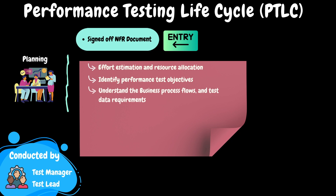During requirements gathering, we should collect the critical business process names. In the planning phase, we should work with business analysts or the functional testing team to understand the detailed navigational steps, dependencies, and test data requirements. We should document all the provided steps and review them with the team to ensure the accuracy of our understanding. This thorough understanding of the business flow is crucial as it forms the foundation for the development of our test scripts. Any mistake at this stage could lead to inaccurate test scripts and consequently inaccurate test results.